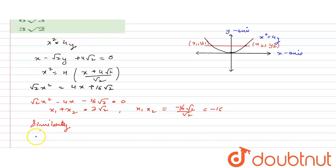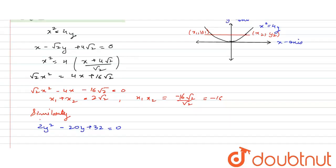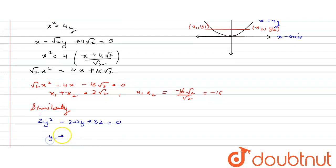So what do we get? We will again get a quadratic equation and the equation will be in terms of y. That will be 2y² minus 20y plus 32 is equal to zero. So y₁ plus y₂ will be 10 and y₁y₂ will be 16.